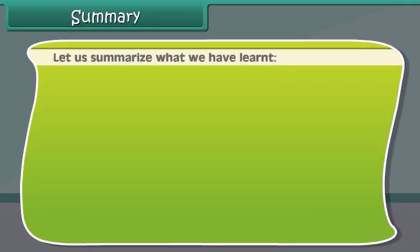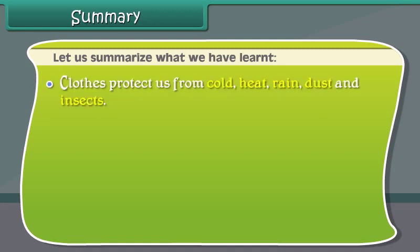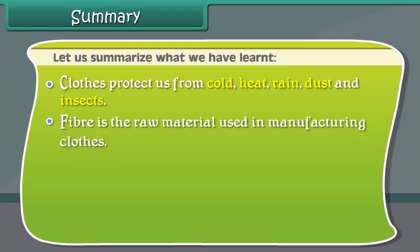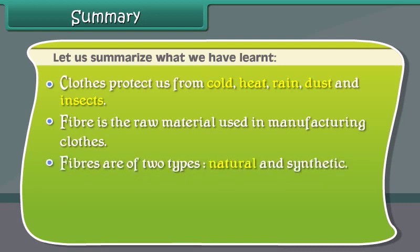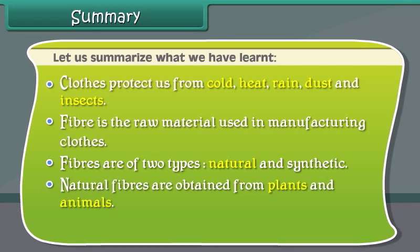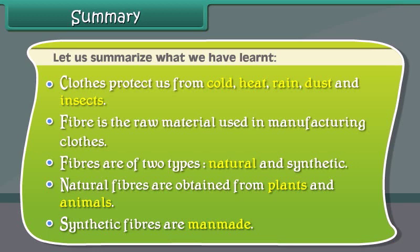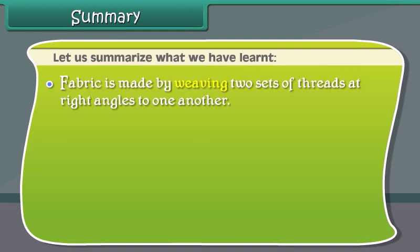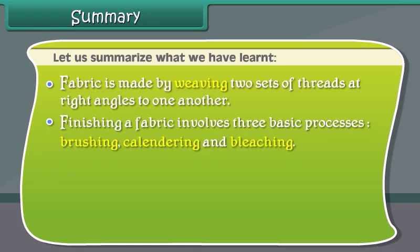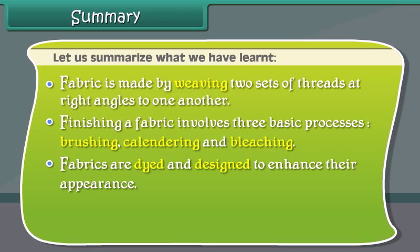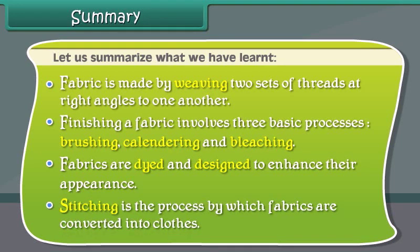Let us summarize what we have learned. Clothes protect us from cold, heat, rain, dust, and insects. Fibers are the raw material used in manufacturing clothes and are of two types: natural and synthetic. Natural fibers are obtained from plants and animals; synthetic fibers are man-made. Fabric is made by weaving two sets of threads at right angles. Finishing involves brushing, calendaring, and bleaching. Fabrics are dyed and designed to enhance their appearance, and stitching converts fabrics into clothes.